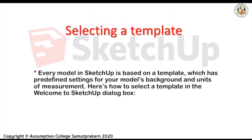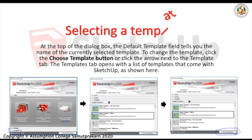Now let's go to selecting a template. Every model in SketchUp is based on a template, which has predefined settings for your model's background and units of measurement. Here's how to select a template in the Welcome to SketchUp dialog box. At the top of the dialog box, the default template field tells you the name of the currently selected template. To change the template, click the Choose Template button or click the arrow next to the Template tab. The Templates tab opens with a list of templates that come with SketchUp.